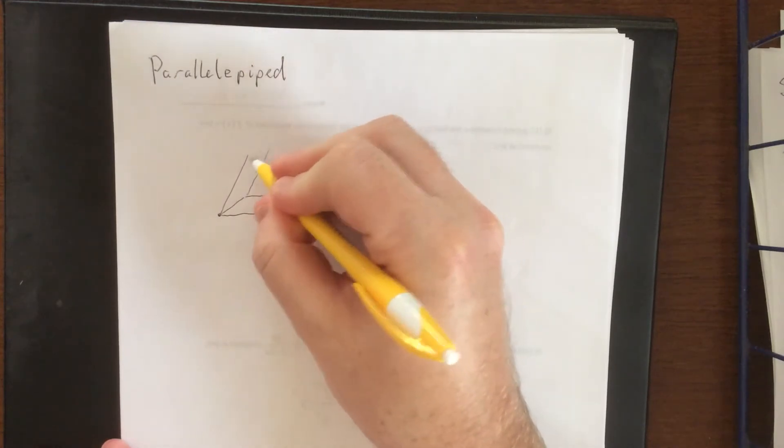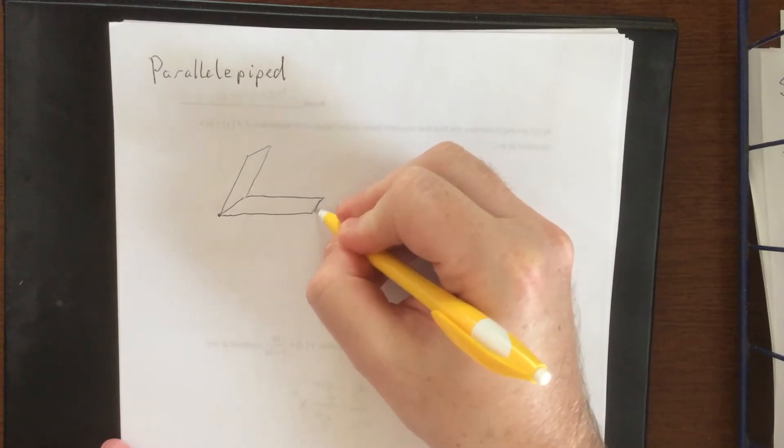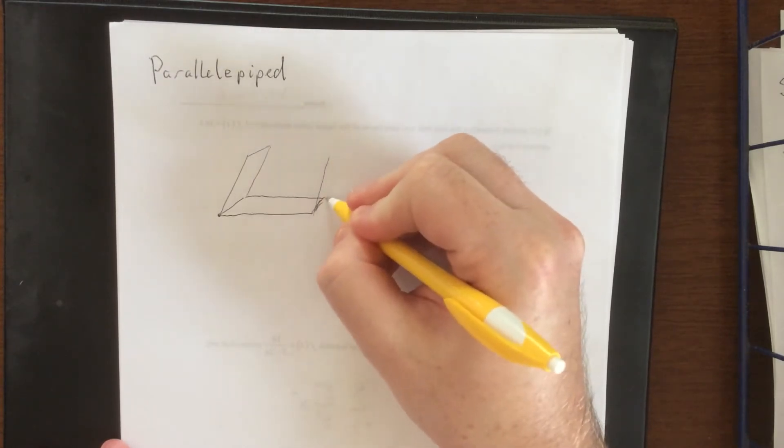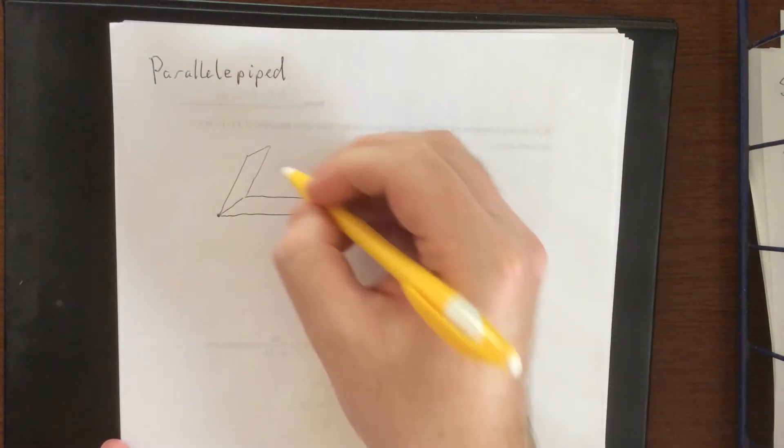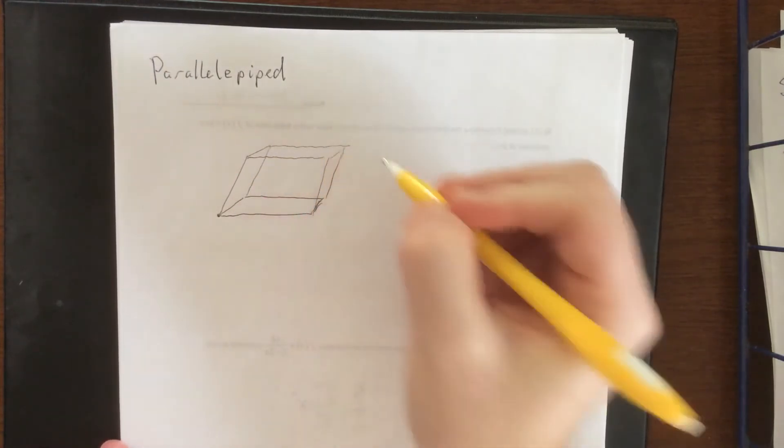Now imagine that you do the exact same thing except instead of using rectangles you decide to use parallelograms. So no rectangles, just parallelograms. We're going to use these parallelograms to make a box. I already see that this is not going particularly well but we'll make it work.